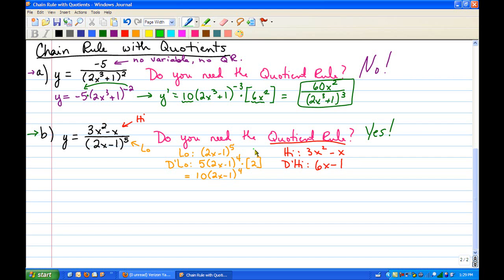So then remember for quotient rule, you have low d high minus high d low over low squared. So let's write our y prime.